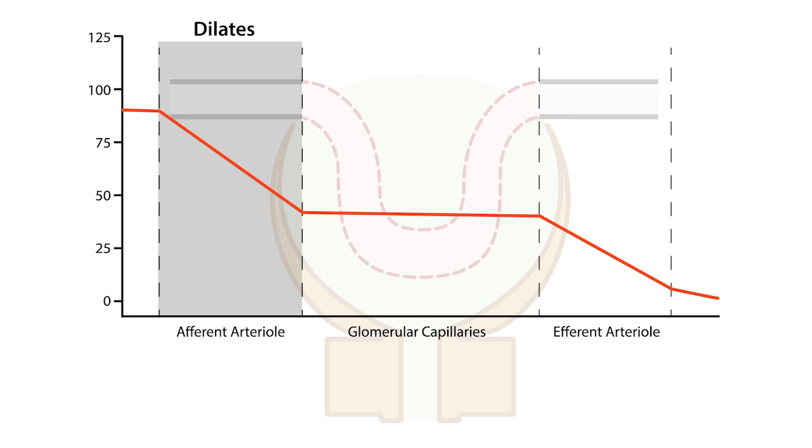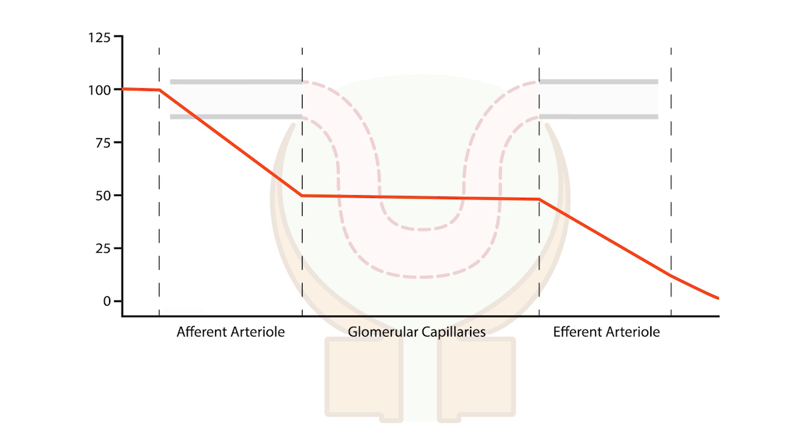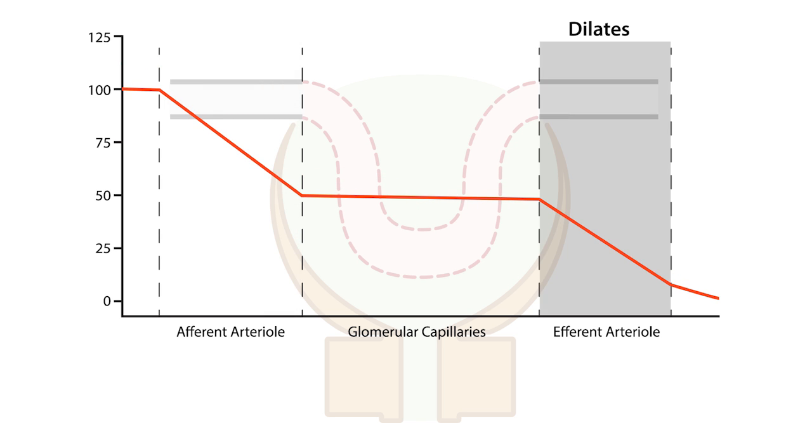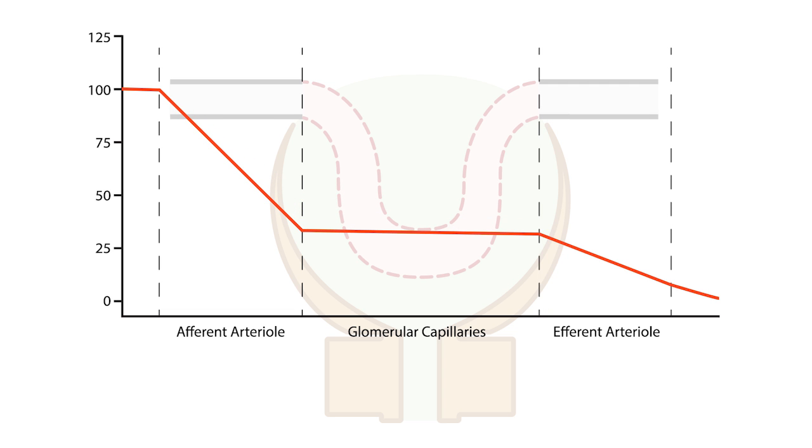Conversely, if systemic blood pressure increases, the afferent arteriole responds by increasing vascular resistance. Decreases in efferent arteriole resistance lead to decreased capillary pressure, while increases in resistance lead to increased capillary pressure.